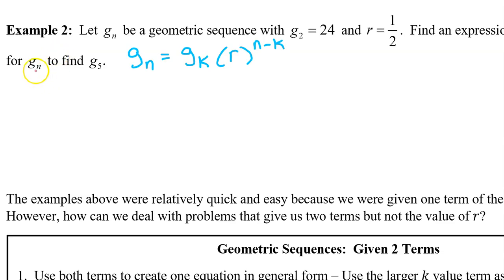In example 2, we will again find an expression for gn. But then we will use that expression to find g5. Let's start off with gn equals gk. So that's going to be a value that we've been given. I'm going to go ahead and put the 24 here this time. Just remember that k is 2. And then we have the common ratio, which is 1 half. And we raise this to the n minus k power. So in this case that will be n minus 2.